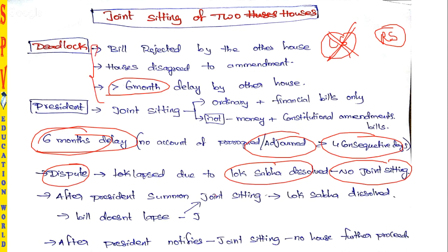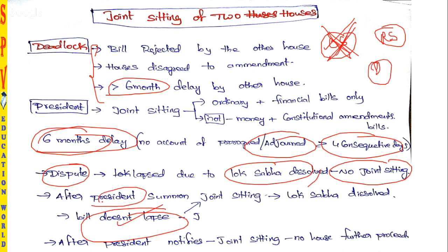However, after the President has announced or summoned a joint sitting, if Lok Sabha then dissolves, the bill does not lapse. Nothing can go against the President's word. After the President summons the joint sitting, even if Lok Sabha dissolves, the bill doesn't lapse; the new government comes and they will call upon for the joint sitting.